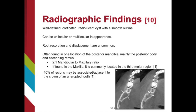Radiographically, the OKC will present as a well-defined corticated radiolucent cyst with a smooth outline. The OKC can be both unilocular or multilocular; however, root resorption and displacement of teeth are uncommon. The most common location for the OKC is the posterior mandible, mainly the body or ascending ramus.